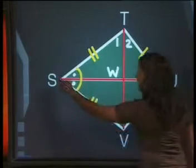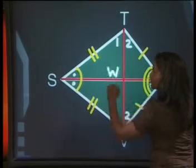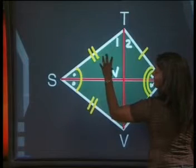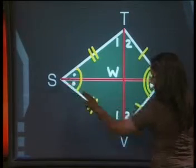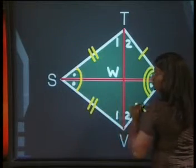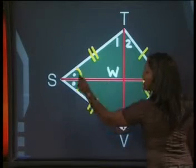And we also know that SW is part of both these triangles. So this triangle STW is congruent to triangle SVW because of the reason side angle side.